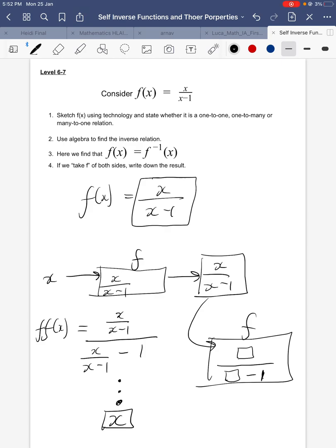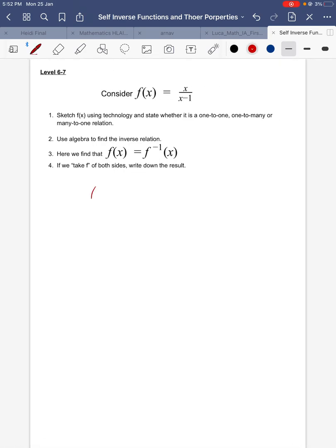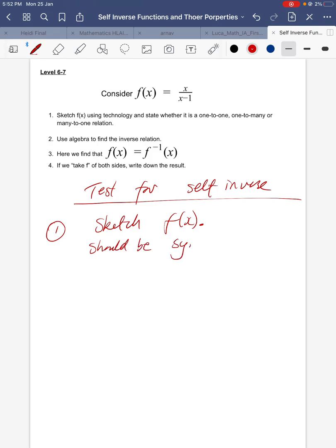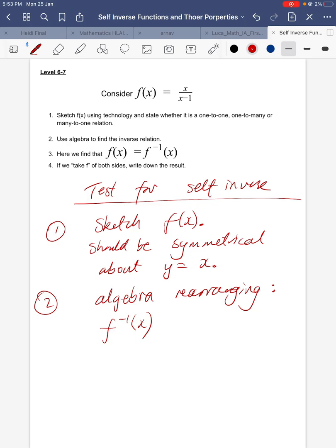So basically, one test for a self-inverse function is, well, let's just summarize this. Test for self-inverse. Let's list the three methods. Method 1: sketch f(x), and it should be already symmetrical about y equals x. So it just kind of reflects onto itself. Option 2: do the algebra rearranging. And that should find that when you find the f^(-1)(x) from the algebra rearranging, it will be the same as f(x). And then 3, this kind of strange one at the end there, if you actually substitute f(x) back into the f function, they should cancel each other out and give just x. Give that a go. See if it works.